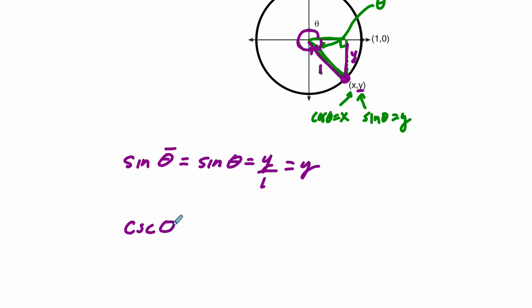You can also say, well, the cosecant is the reciprocal of the sine. It's 1 over the sine of theta. So, that means it's 1 over sine of theta, which is y. And you're done.